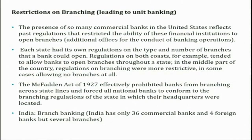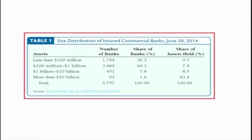However, as compared to that, in India we have branch banking. India has only 36 commercial banks and 46 foreign banks, but all of them have several branches across the country. That means only a few number of banks in India. At the same time, in the US there are more than 5000 banks — 5757 as of this year. We can see a huge difference in the number of banks between the two countries.